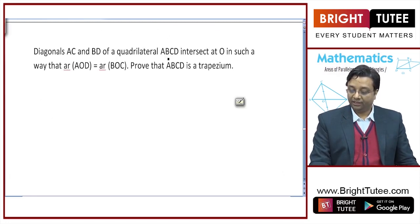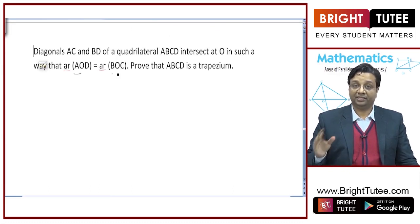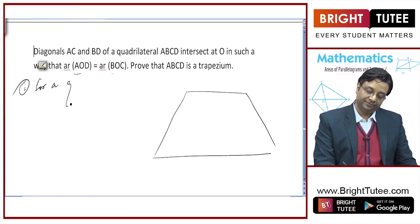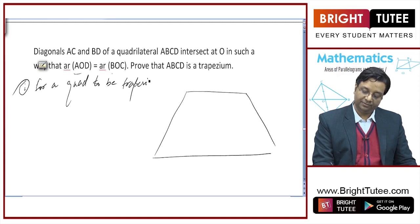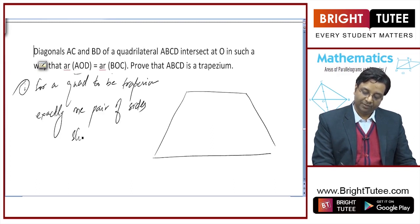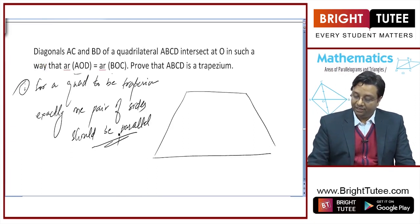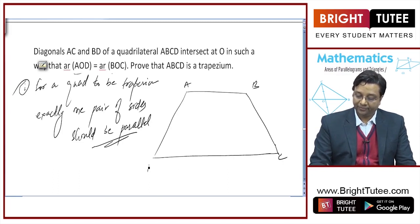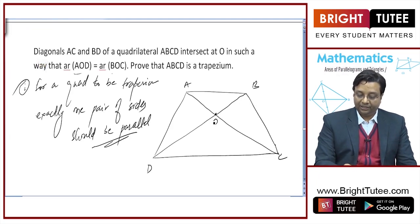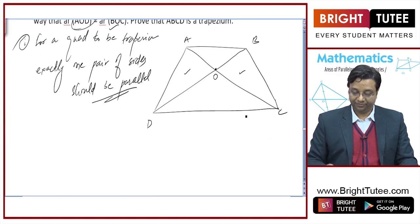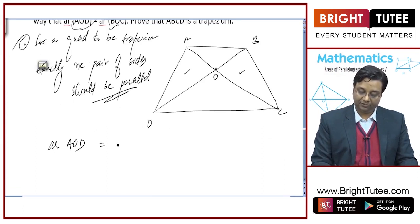Now, diagonals AC and BD of a quadrilateral ABCD intersect at O in such a way that area of triangle AOD equals area of triangle BOC. Prove that it is a trapezium. First thing you should know: for a quadrilateral to be a trapezium, exactly one pair of sides should be parallel. So my aim here is to prove one pair of sides as parallel.